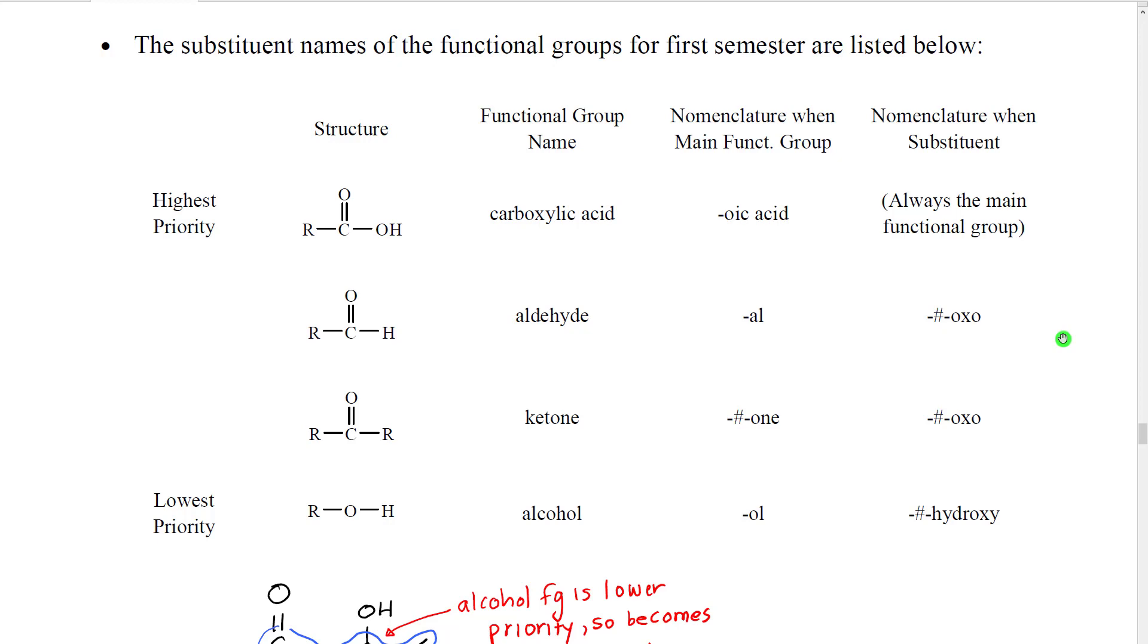So here's another version of the table from earlier. We've added a column. So again, the functional groups are arranged in order of priority from highest to lowest. And again, these are only the functional groups we're going to learn to name in first semester. You can see in the far right hand column that we have a different name for when the groups are substituents from when they are the main functional group. One thing to point out is that in this list, carboxylic acid would always be the highest priority group and so it would never be treated as a substituent.